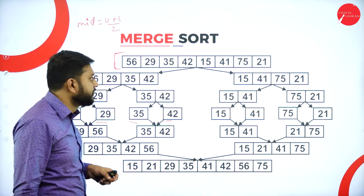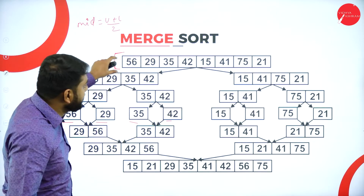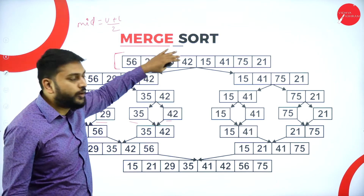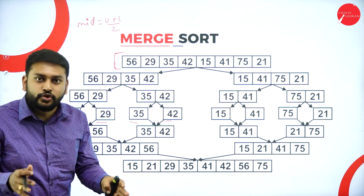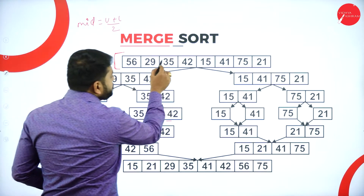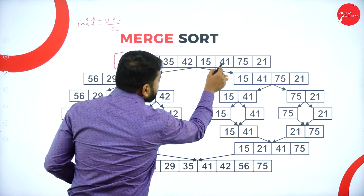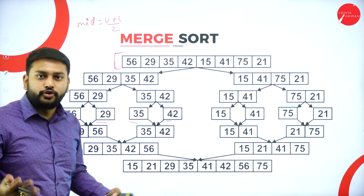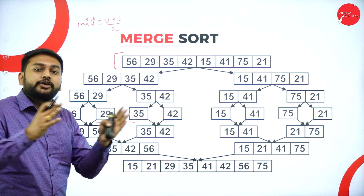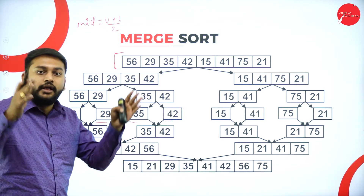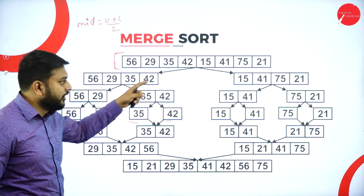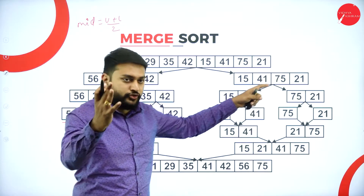Let me explain the flow first. I have an unsorted array and I am going to divide it into two different parts. I have 8 elements in the array. If I calculate the mid value for this array, I will get two different arrays which have four elements in the first part and four elements in the second part.